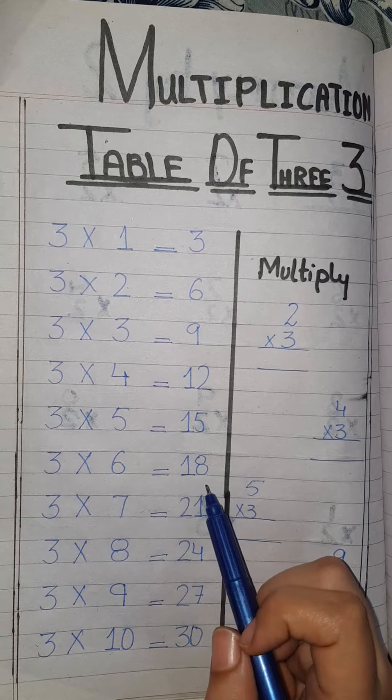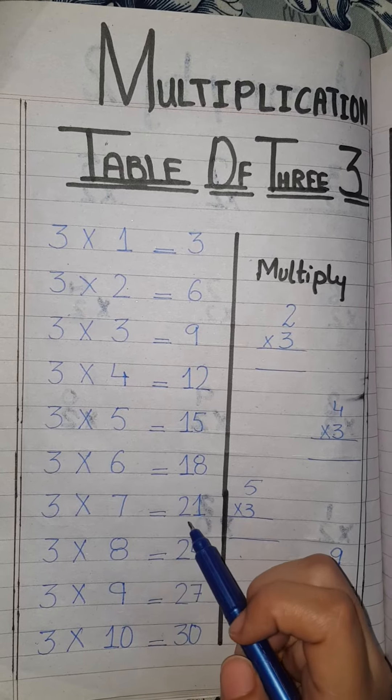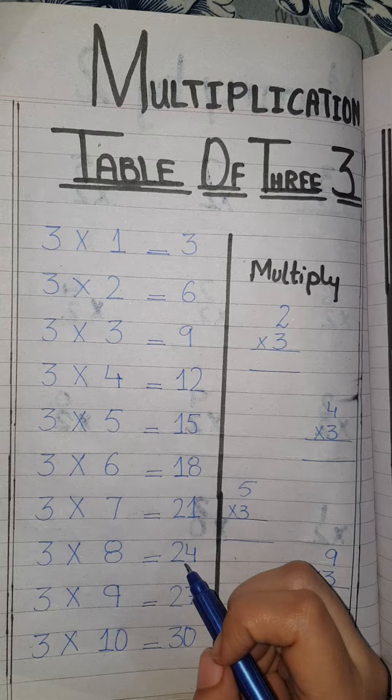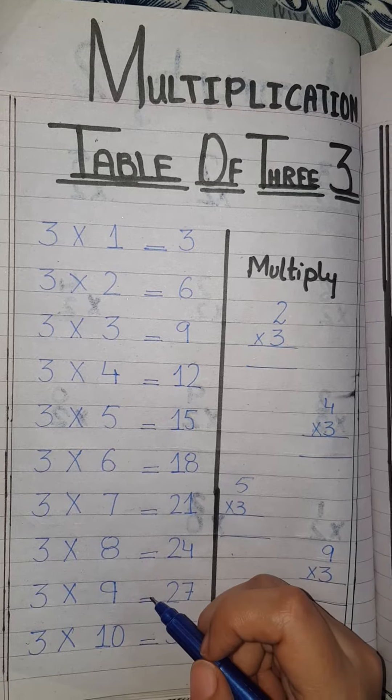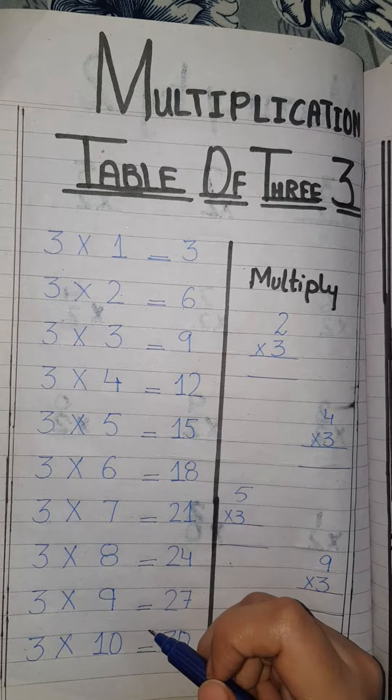3 times 6 is 18, 3 times 7 is 21, 3 times 8 is 24, 3 times 9 is 27, 3 times 10 is 30.